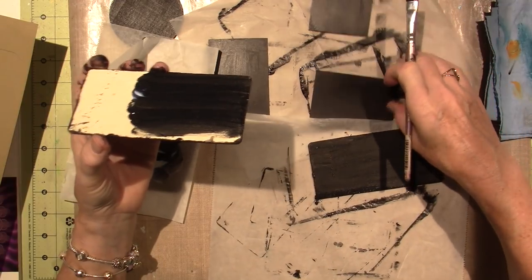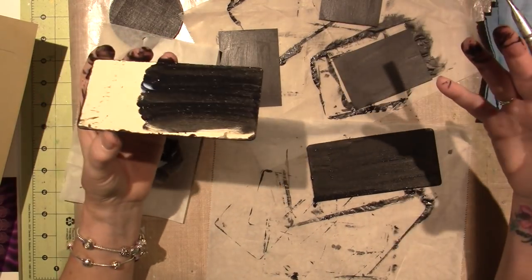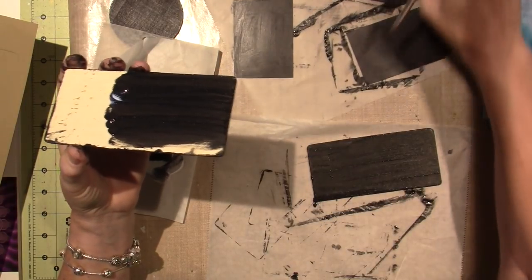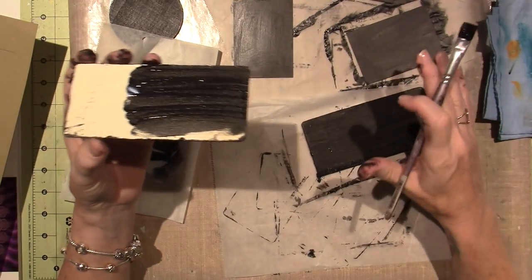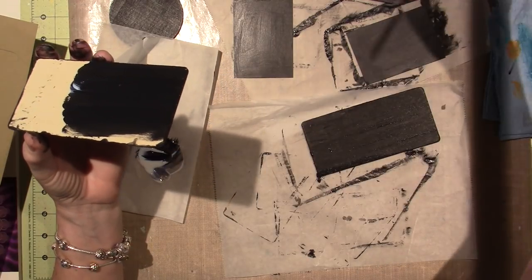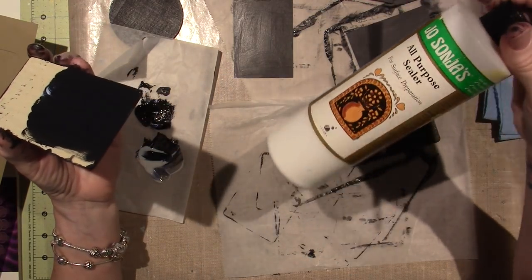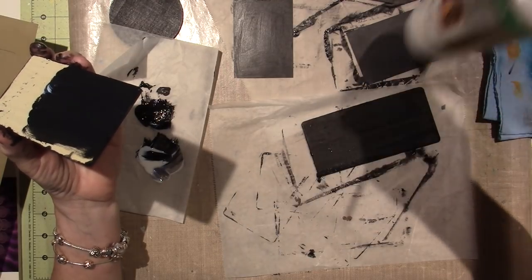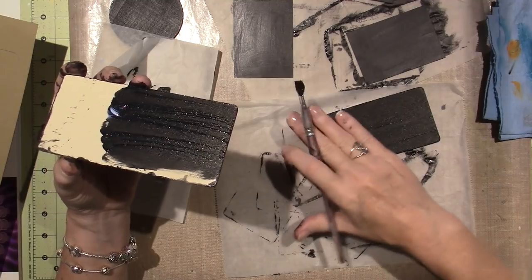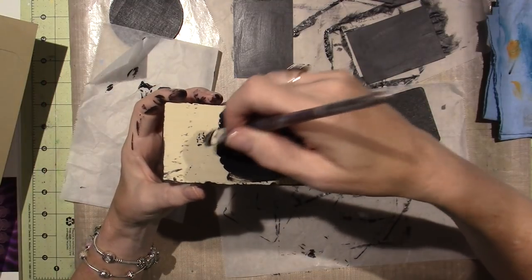I'm just base coating, and when I say base coating, I mean prepping the wood. Actually, I'm prepping. I'm not base coating. I'm prepping the surface. So I have my all-purpose sealer out, and it comes in all shapes and forms. You can use gesso. You can use anything that's going to make a barrier between the surface, which is porous.